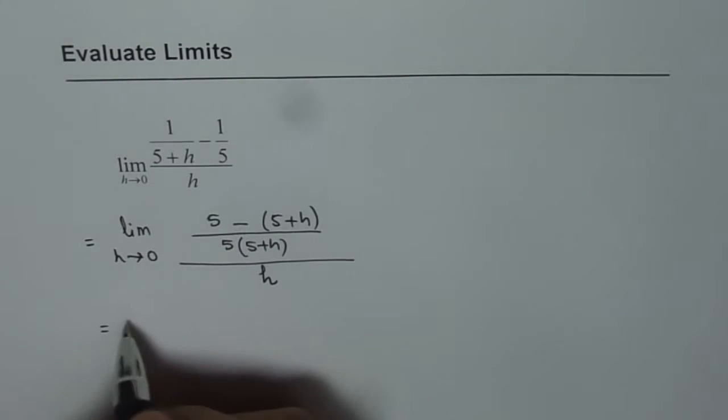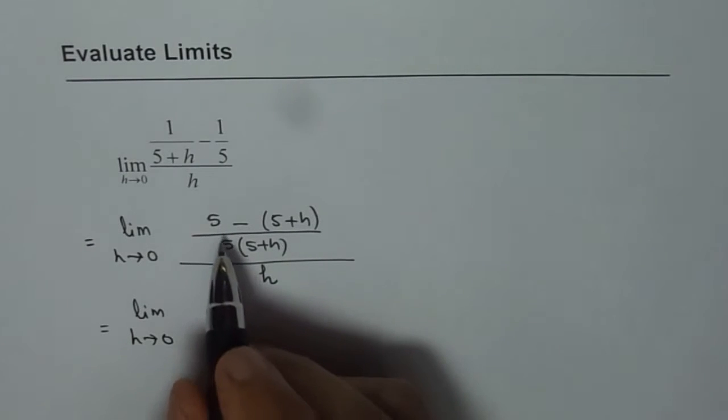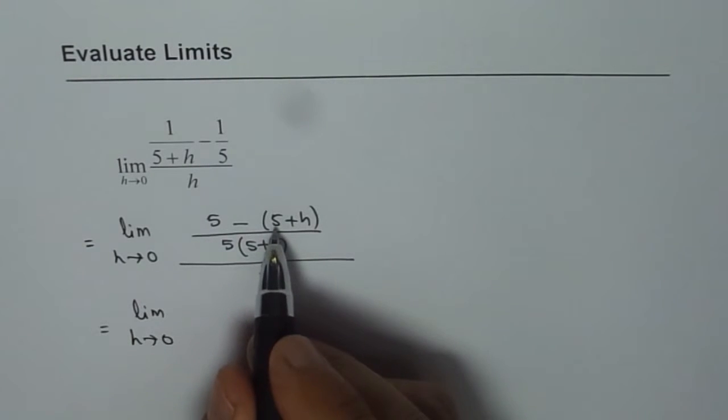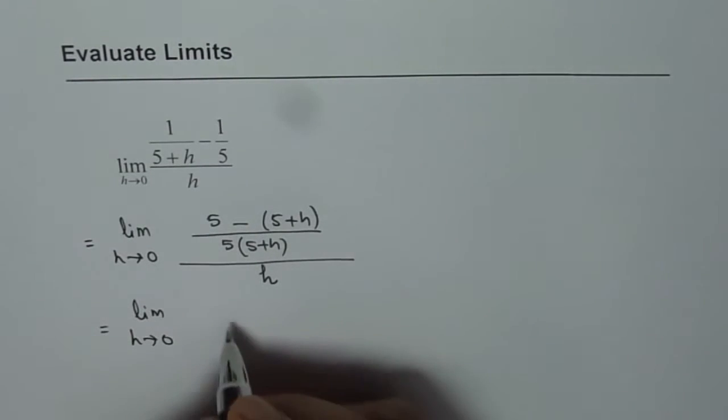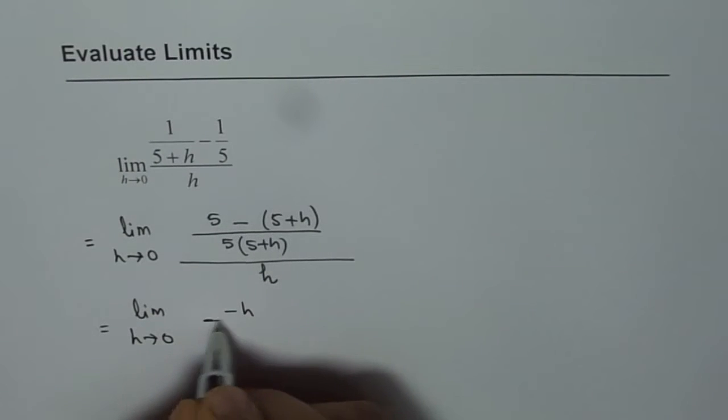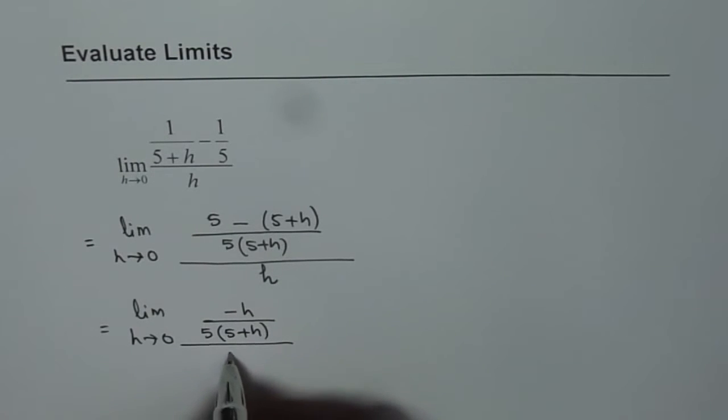Now we can write this as limit h approaches 0. 5 minus 5 is 0. You are left with -h on the top. So -h over 5 times (5+h), everything divided by h.